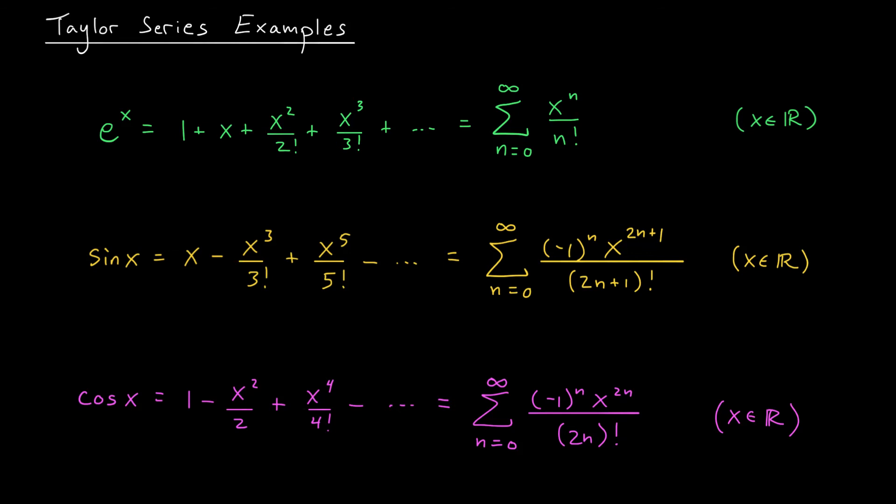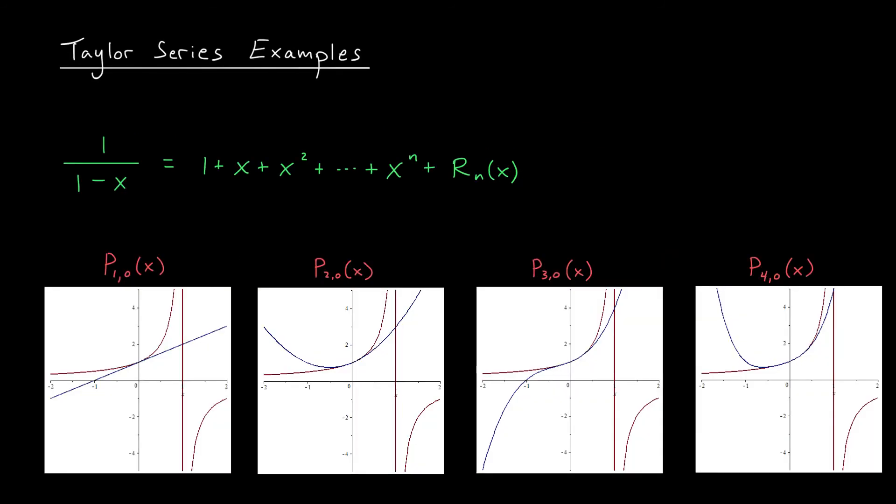Next, I'm going to show you two examples of functions where the situation doesn't play out so nicely. They have Taylor series, but those series won't always match the value of the function. Consider, for example, the function 1/(1-x). Try to show as an exercise that a general term in its Maclaurin polynomial is of the form x^k. We'll see this formula again when we talk about geometric series.